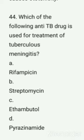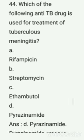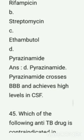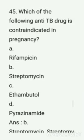Question number 44: Which of the following anti-TB drugs is used for treatment of tuberculous meningitis? Options are: A) rifampicin, B) streptomycin, C) ethambutol, D) pyrazinamide. Correct answer: option D — pyrazinamide. It crosses the blood-brain barrier and achieves high levels in cerebrospinal fluid.